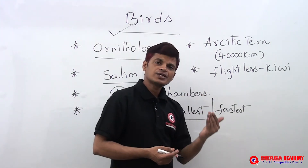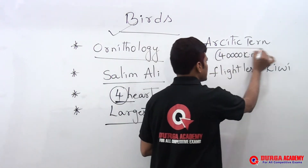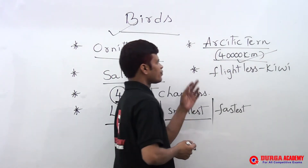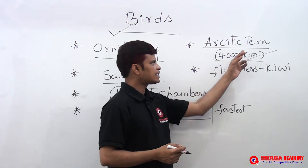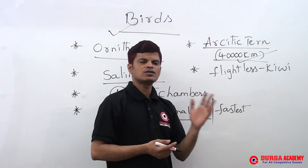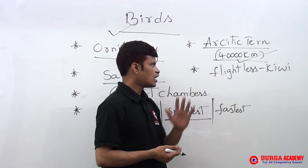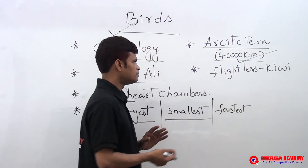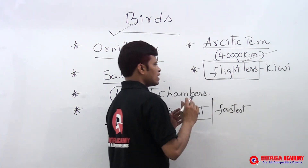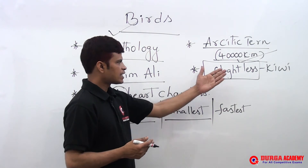The bird that travels the longest journey in the world is the Arctic tern, covering 40,000 kilometers. The Arctic tern is also the longest migrating bird. The kiwi is a flightless bird, meaning it cannot fly.